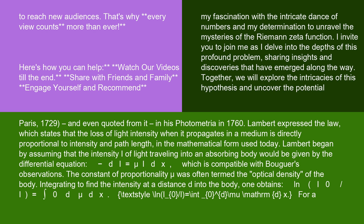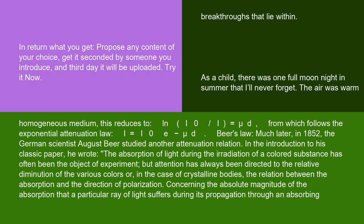The constant of proportionality μ is often termed the optical density of the body. Integrating to find the intensity at a distance d into the body, one obtains ln(I₀/I) = ∫₀ᵈ μ dx. For a homogeneous medium, this reduces to ln(I₀/I) = μd, from which follows the exponential attenuation law: I = I₀ e^(−μd).